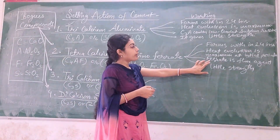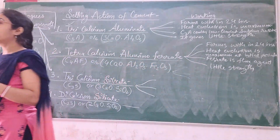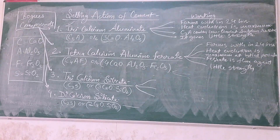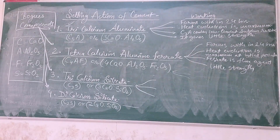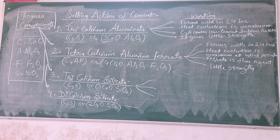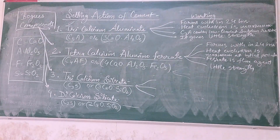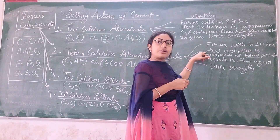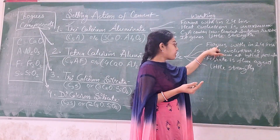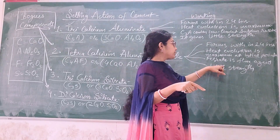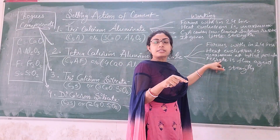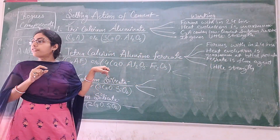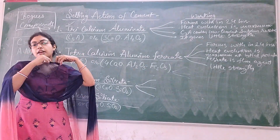The other difference is that in C4AF, the ferrite content behaves like a flux agent. A flux agent is something that promotes or elevates a process — it may elevate the heat evolution, the formation of the compound within 24 hours, or the little strength gaining. The ferrite content acts as a flux agent, promoting the process faster.